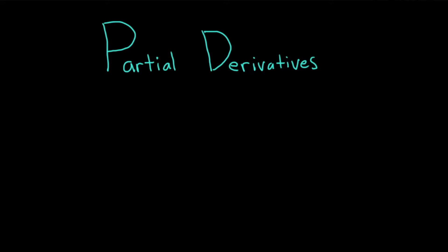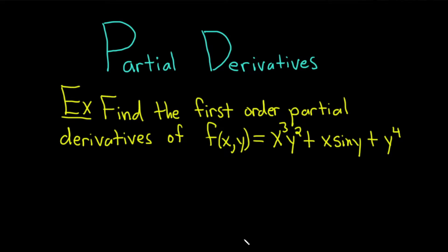Hi everyone. It's the Mathsorcer here with Chegg. In this video, we're going to discuss partial derivatives. Let's start with an example. Find the first-order partial derivatives of f(x,y) = x³y² + x·sin(y) + y⁴. Let's work through this one's solution.